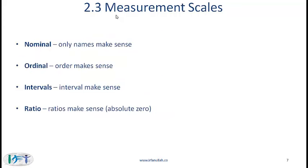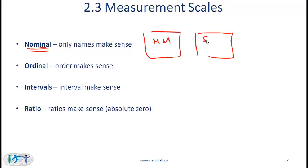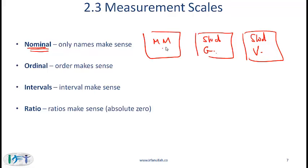Let us now discuss four different measurement scales. A nominal scale is one where only names make sense. For example, if we talk about different kinds of mutual funds — a money market mutual fund, a growth stock fund, or a value stock equity fund — these three funds are not better or worse relative to each other. Only the names make sense, because the names tell us what sort of fund we are considering.